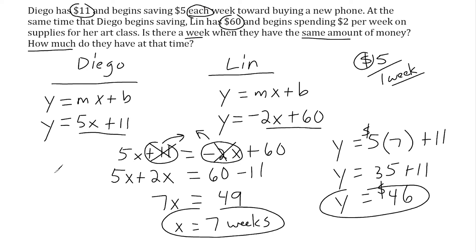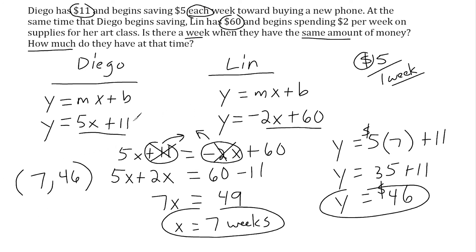If we were to graph both of these equations on the coordinate plane, they would intersect at a single point. That point of intersection would be (7, 46), which is a solution that satisfies both equations — making it the solution to this system of equations.